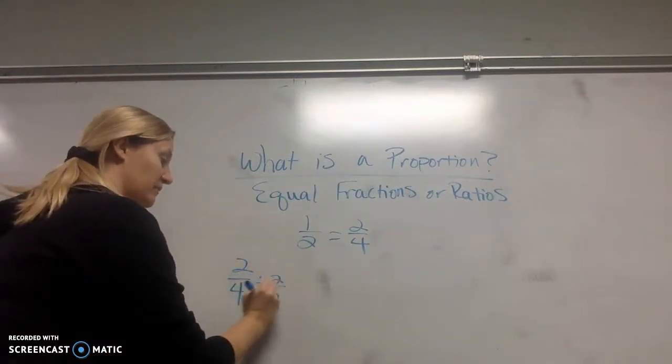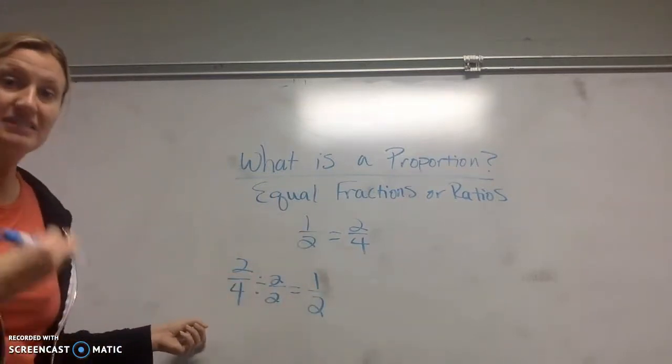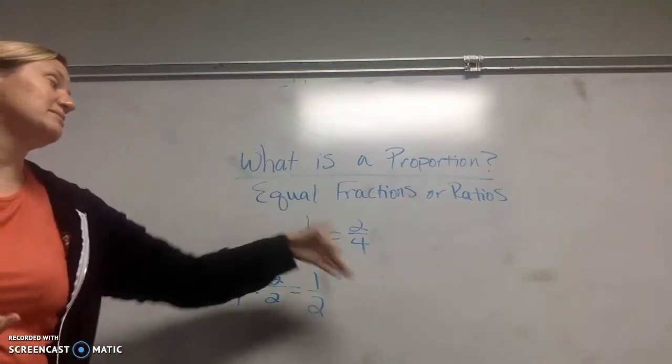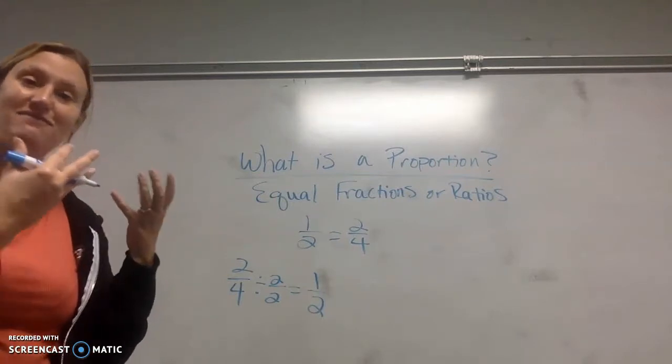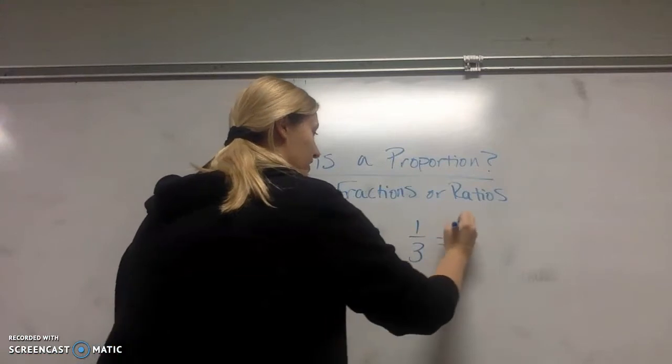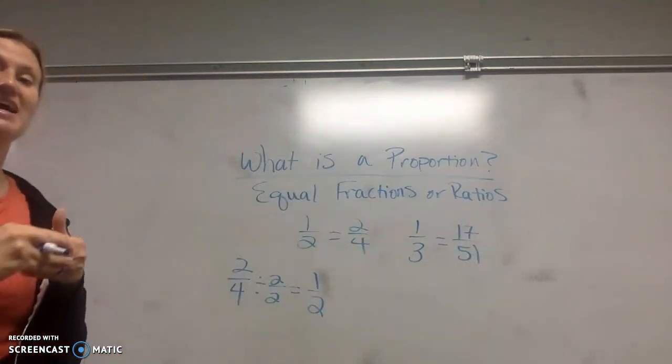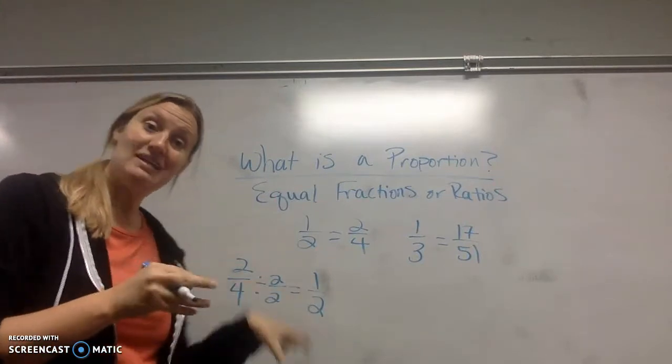So if I simplify two-fourths down, I get one-half. So that way I know, yes, it is a proportion. Now that's pretty simple to do here, but if I give you something like one-third and 17 over 51, the simplifying may not look as appealing as it does for this problem.